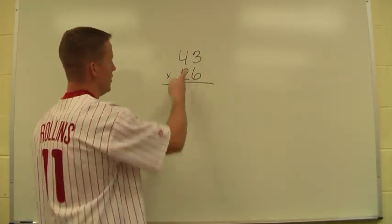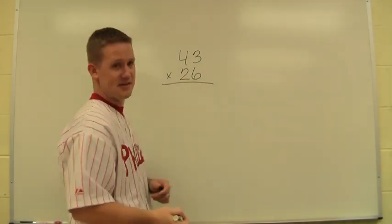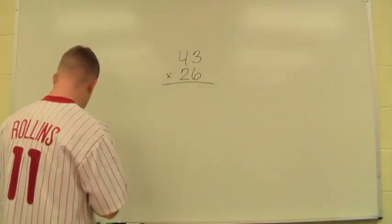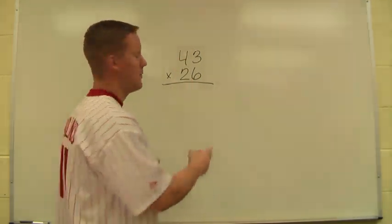So when we start, we usually start over here in the tens column since that's our biggest place value. And instead of looking at this as 2, we think of this as 20 since it's in the tens column and that's what it represents.